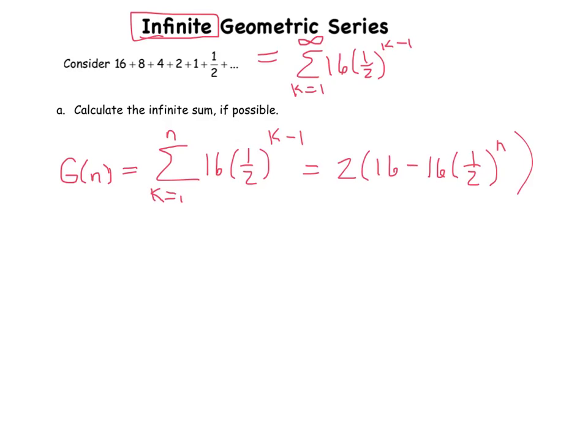All right, this is our closed form rule. So if we wanted to find the sum of the first two terms, I'd plug in a 2 for n, and I'd get an answer. If I wanted to find the sum of the first five terms, I'd plug in 5. The sum of the first 200 terms, I'd plug in 200, etc.